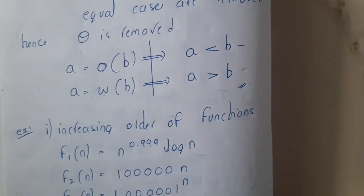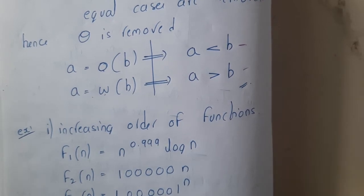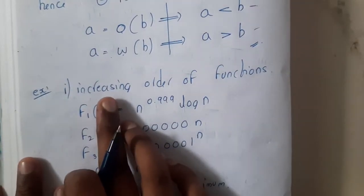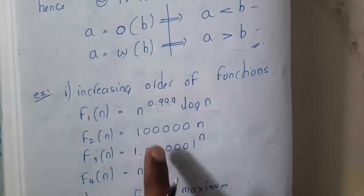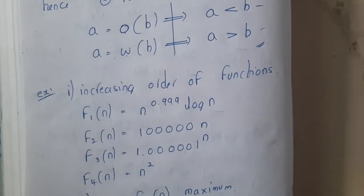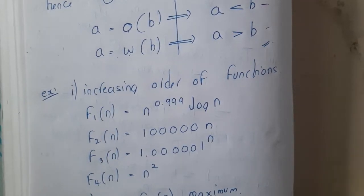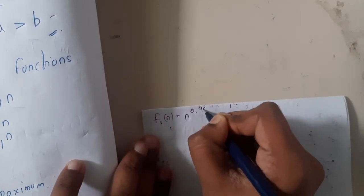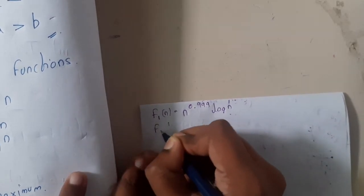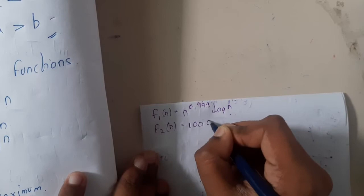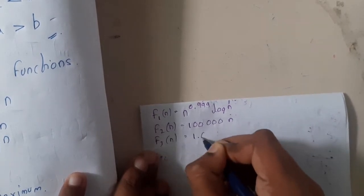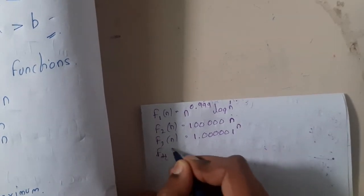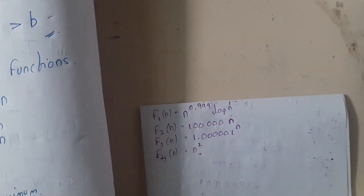Now, what type of questions can we expect in the examination? Let us go through the first example. We will take two examples, and the rest we will discuss in PYQPs. The first question asks us to arrange these functions in ascending order: f1(n) = n^0.099 · log n, f2(n) = 1.0001^n, and f4(n) = n².